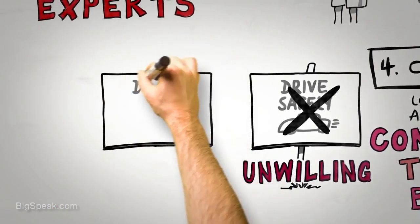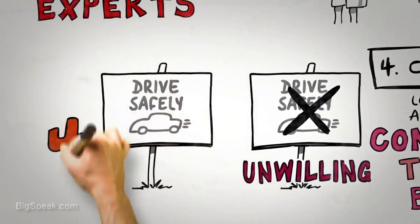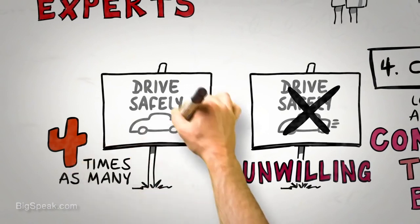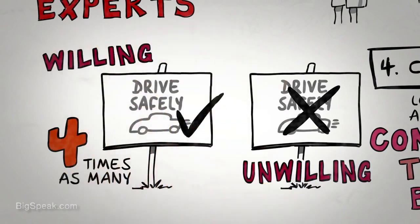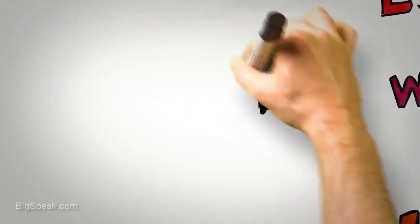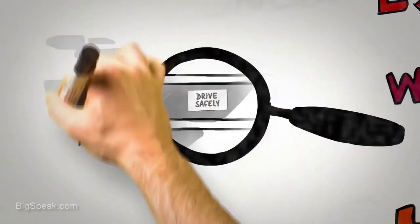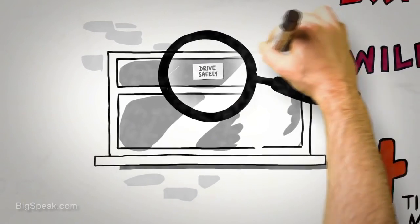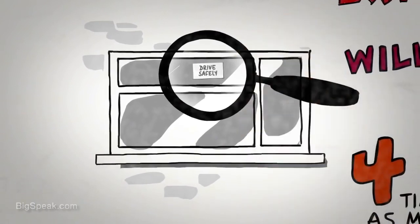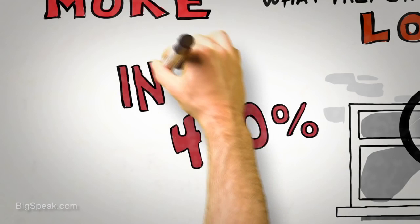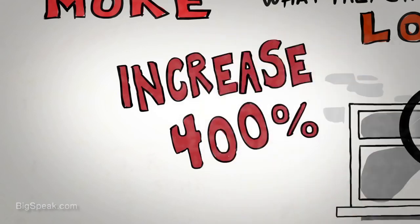However, in a similar neighborhood close by, four times as many homeowners indicated that they would be willing to erect this unsightly billboard. Why? Because ten days previously, they had agreed to place a small postcard in the front window of their home that signaled their support for a Drive Safely campaign. That small card was the initial commitment that led to a 400% increase in a much bigger but still consistent change.